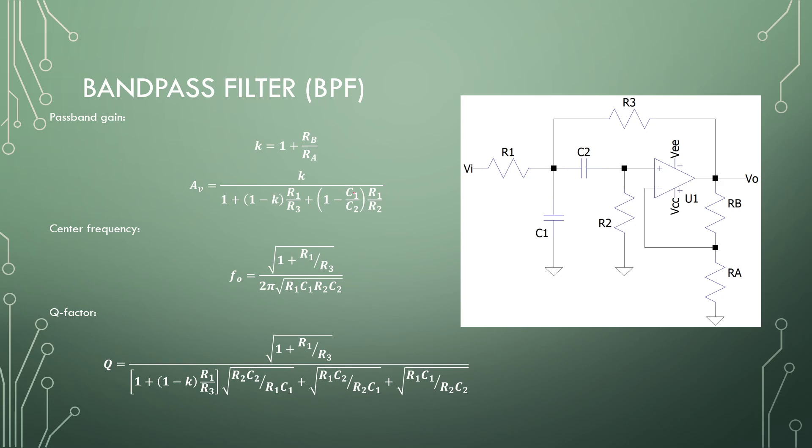So the equations from this, we have the gain from our resistor A and resistor B, we have a final gain of this amplifier, which is related to this gain and then the component choices in our positive feedback network here, our center frequency, and then our Q-factor.